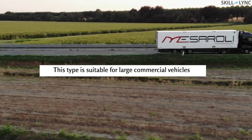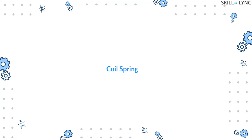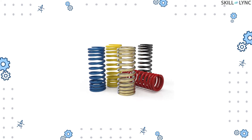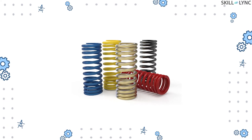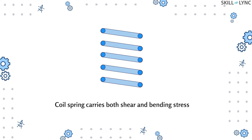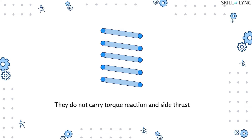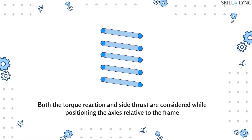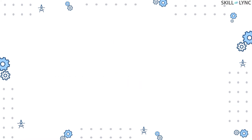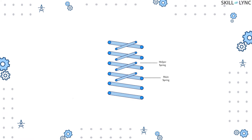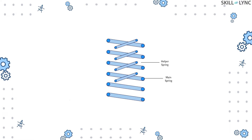The third type of steel spring is the coil spring. According to requirement, steel wires are coiled throughout. These are used in both front and rear independent suspension. The coil spring withstands both shear and bending stress, but not torque reaction and side thrust, so arrangements are made to account for both while positioning the axles relative to the frame. The energy stored per unit volume in coil springs is twice that of leaf springs. Helper springs are also used here to apply stiffness in a progressive manner against increasing load.